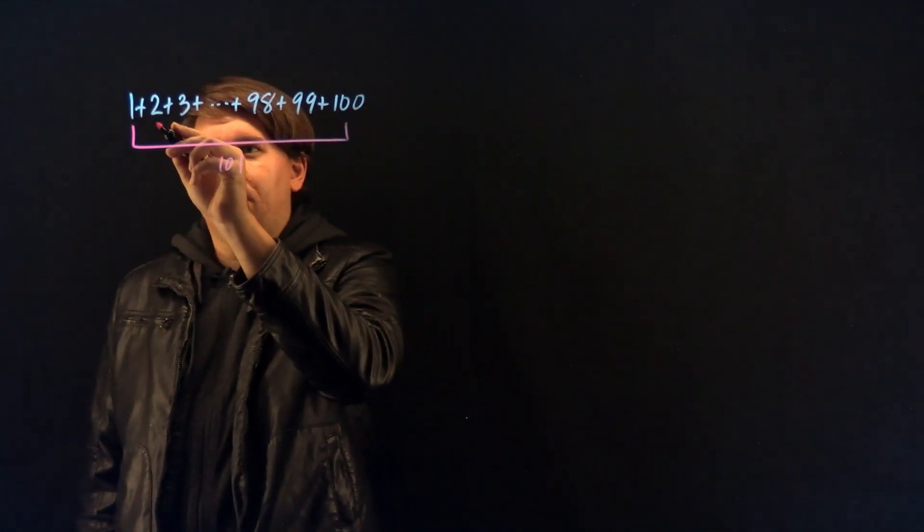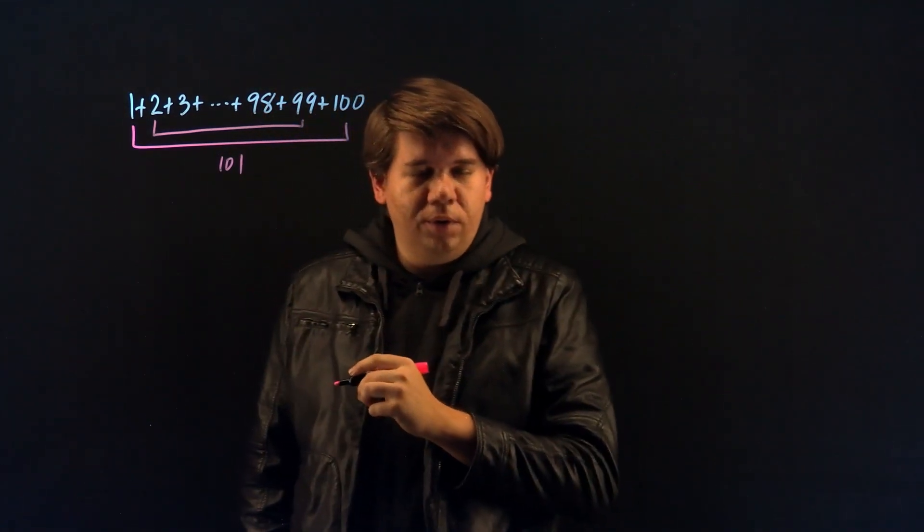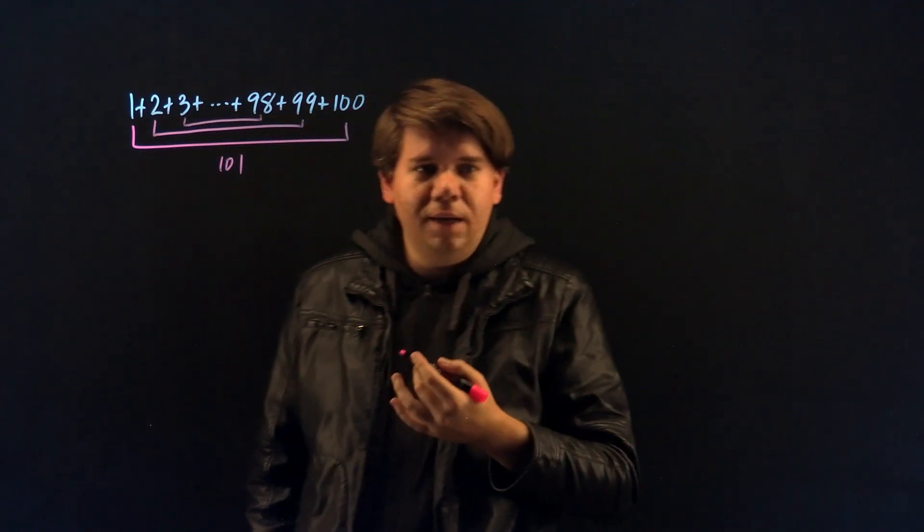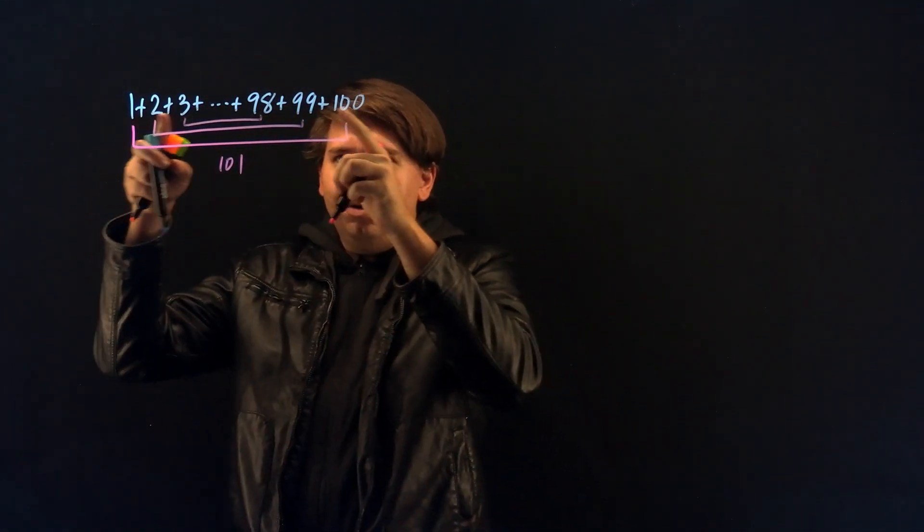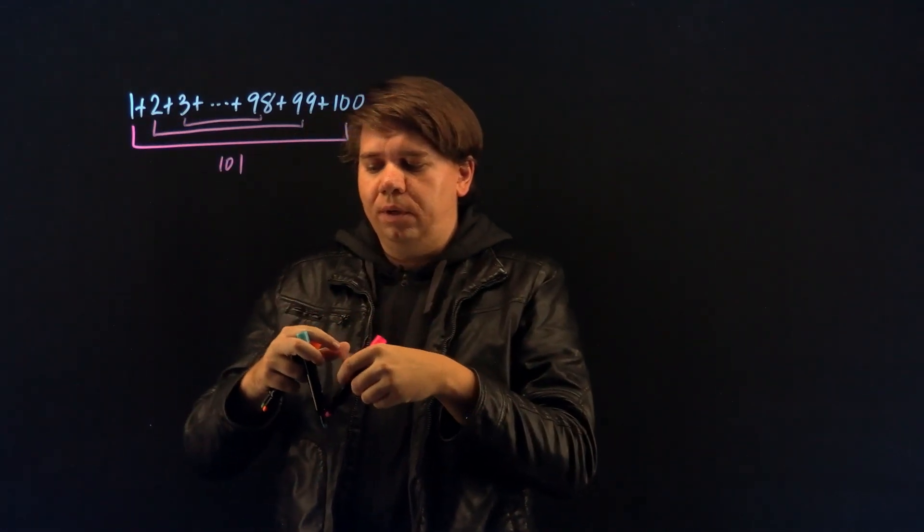Likewise, you can sum the second with the second to last. 2 plus 99 also gives you 101. And the third, 3, with the third from last, 98. And as you continue to pair these from both ends, you'll always get these pairs adding up to 101.